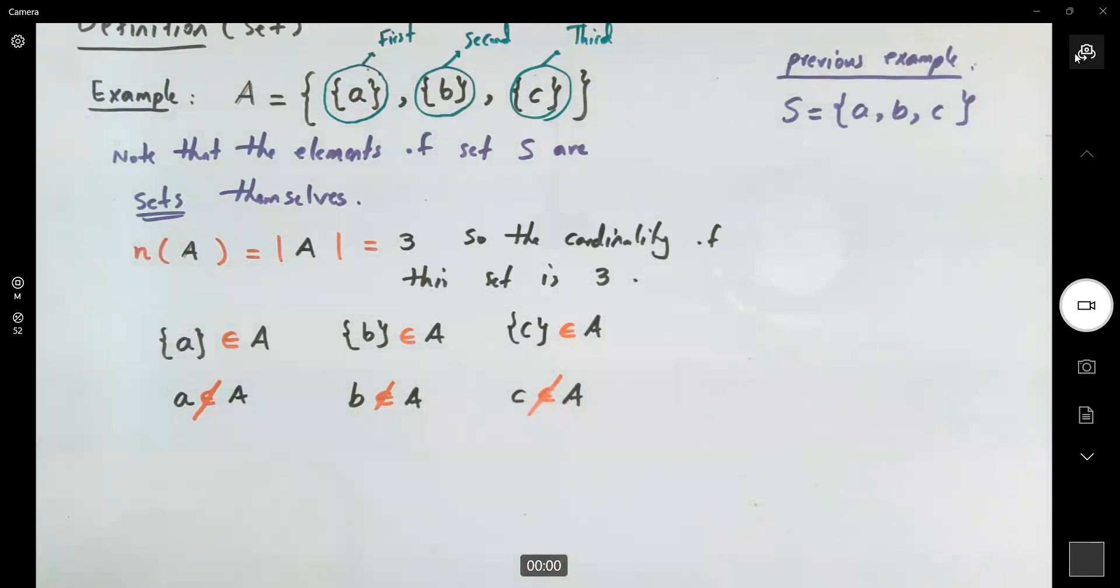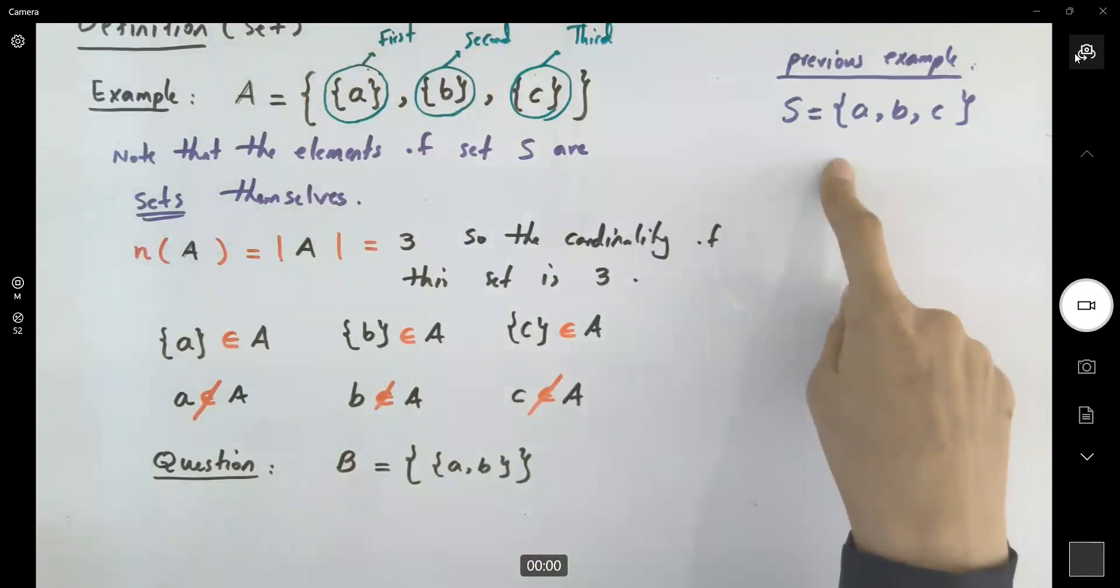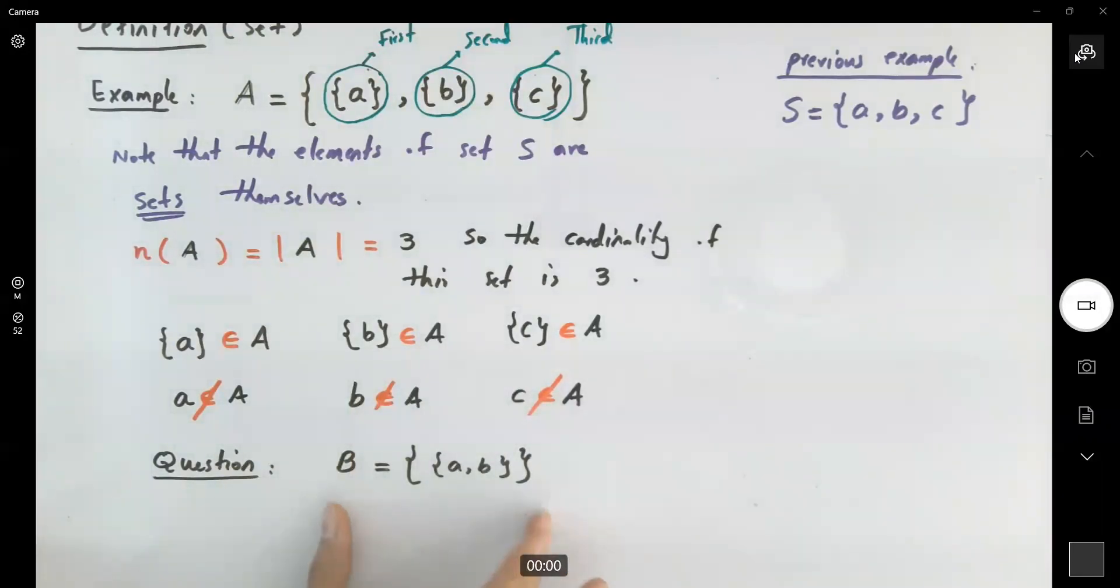Question. What if I write the set this way? Set B is the set including a set {a, b}, and that's it. What is the cardinality of this set? I'm trying to make these cases the way that we can answer them. It's not just always about a simple set like this. You might have more complicated, more complex forms.